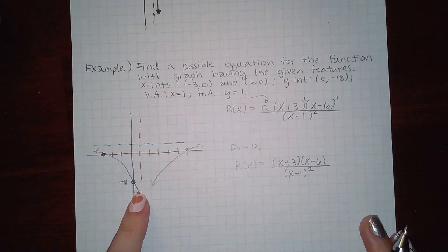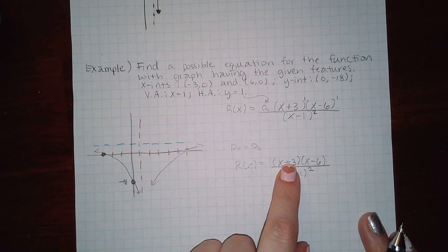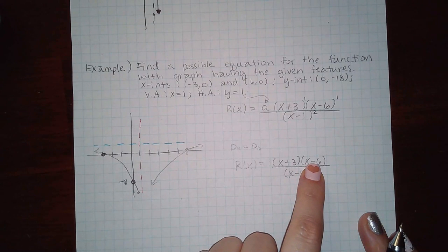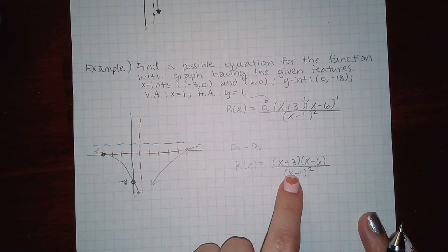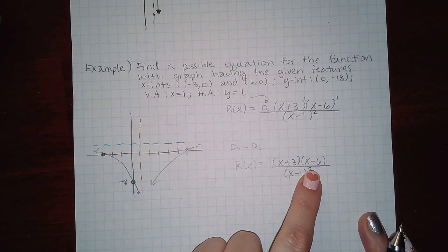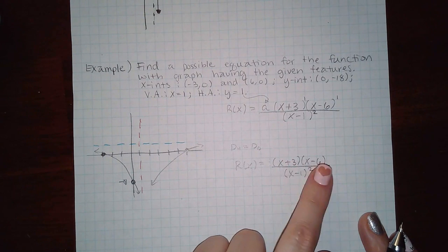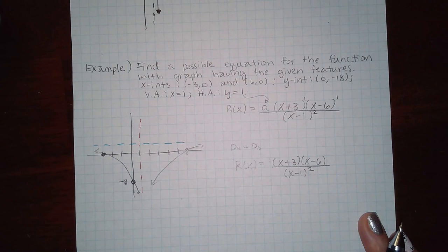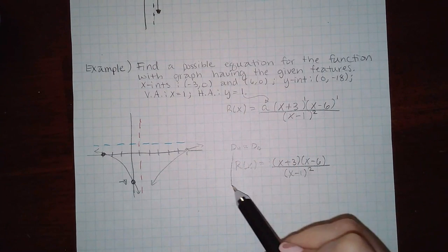If I look at this one my y-intercept is negative 18. If I plug in zero here I get three, if I plug in zero here I get negative six, and if I plug in zero here I get negative one squared. So three times negative six is negative 18, and then negative one squared is a positive one. Negative 18 over positive one is in fact negative 18.